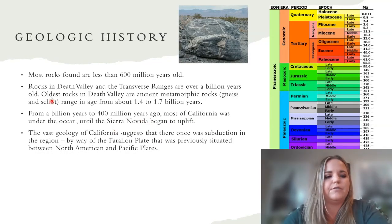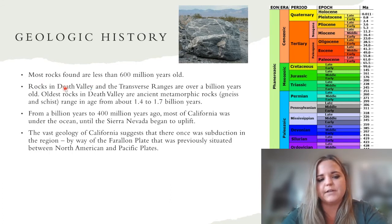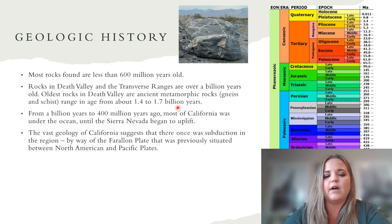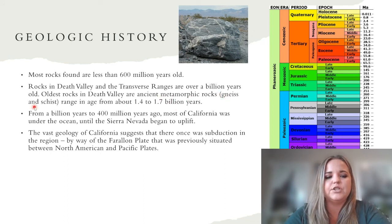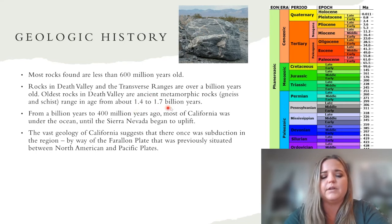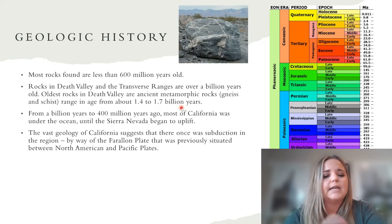Most rocks found in most areas are 600 million years old or less, but in a couple of areas in California — specifically Death Valley and the Transverse Ranges — we see rocks over a billion years old. Ancient metamorphic rocks found there range from about 1.4 to 1.7 billion years old. The Earth is only 4.6 billion years old, so having rocks that are very close to Earth's origin in age is remarkable.